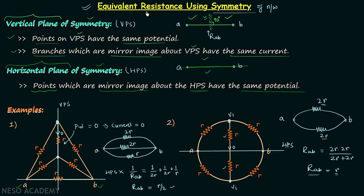I hope you now understand how to calculate the equivalent resistance using the symmetry of the network. We have solved one problem using the VPS property and one using the HPS property, but we have not yet solved a problem using the third property. In the next lecture we will take one problem applying that property, so make sure to watch the next lecture to complete this topic.